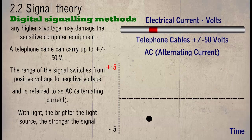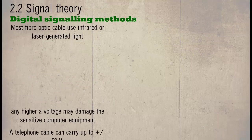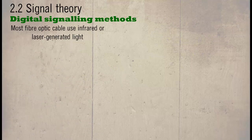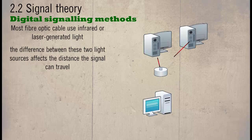With light, the brighter the light source, the stronger the signal. Most fiber optic cables use infrared or laser generated light. The difference between these two light sources affects the distance the signal can travel and the speed of the line.